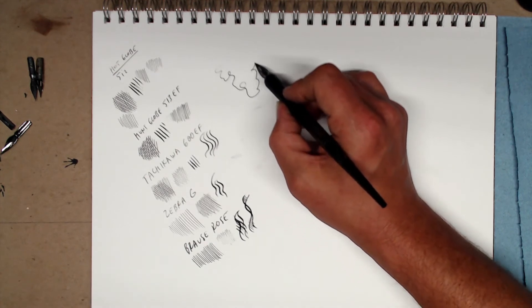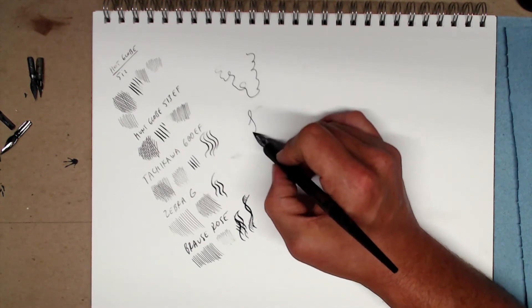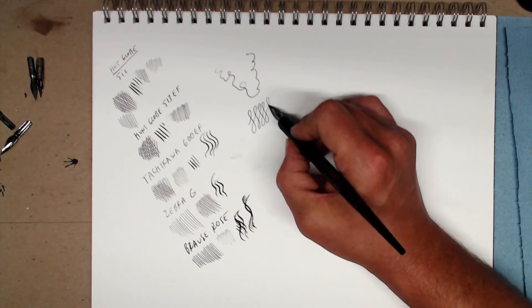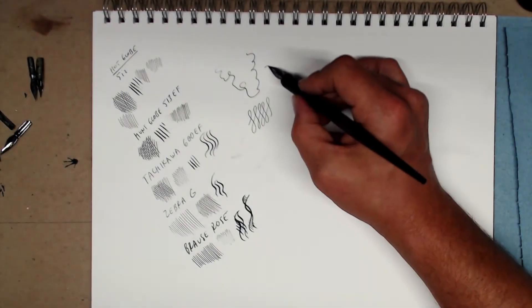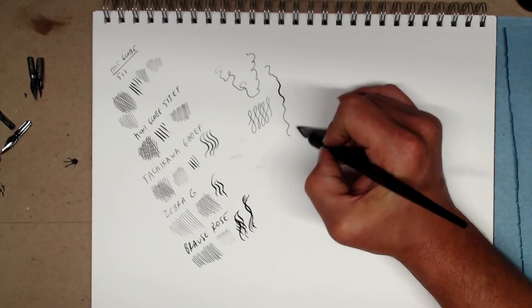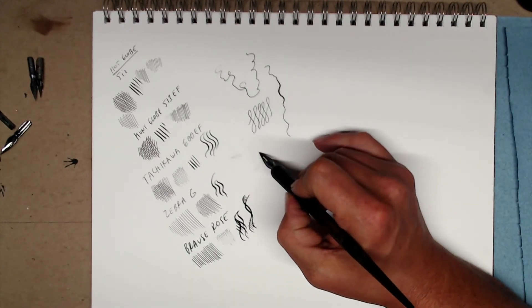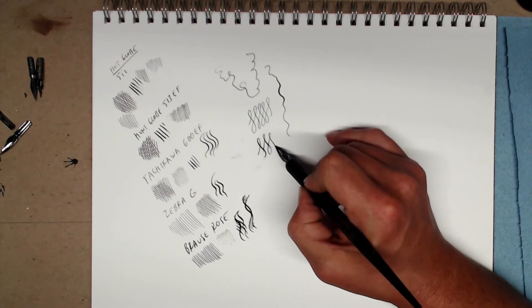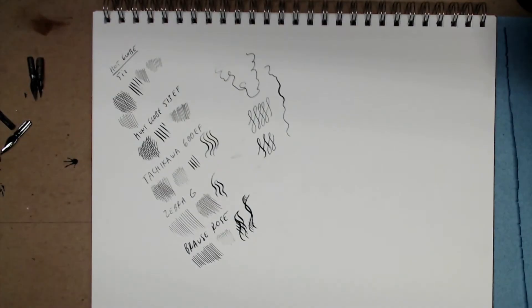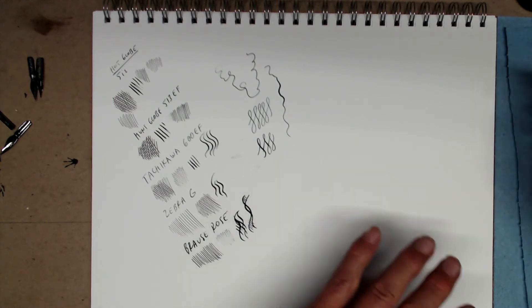Try putting down a bunch of lines. Just see how it feels on the paper. You can do some figure eights, like this. Then, try flexing the pen. So, going from a thin line to a thick line. You can try some figure eights with a little bit of flex in them. This will give you a sense of how long you can draw before needing to dip the pen.